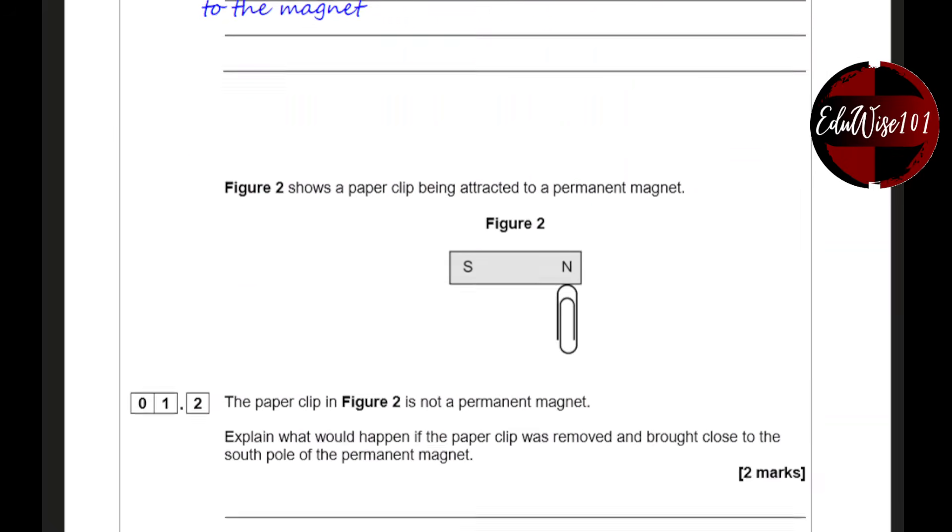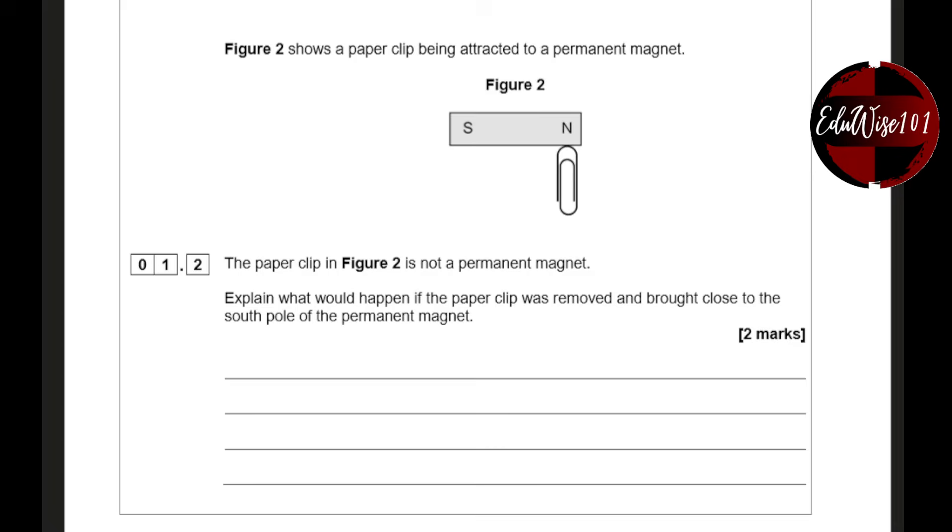Second question. Figure two shows a paper clip attached to a permanent magnet. The paper clip in figure two is not a permanent magnet. Explain what would happen if the paper clip was removed and brought close to the south pole of the permanent magnet.